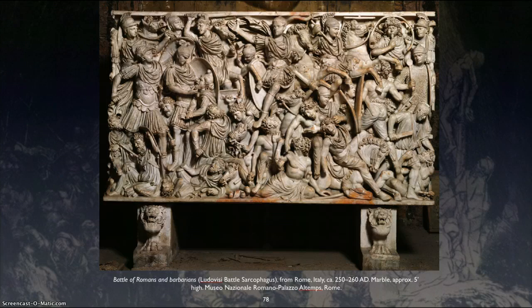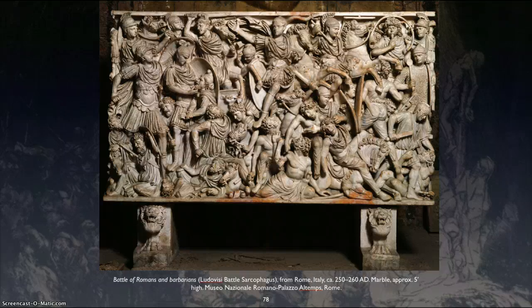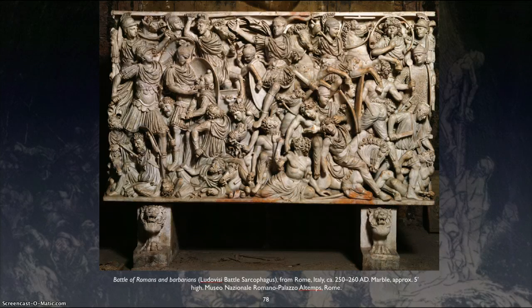Originally, the Romans would cremate their dead, burn them until it was just ashes, and then hold the ashes in some sort of container. This happened with Julius Caesar and other leaders especially. But as the Christian church increased in Rome, even though it was still illegal, it did influence segments of society, and the Romans started burying their dead above ground in sarcophagi, or coffins.